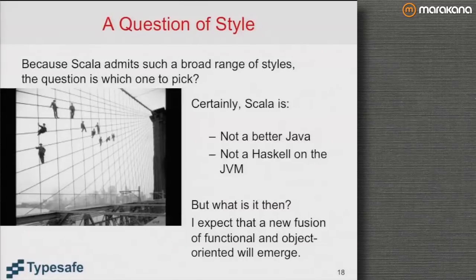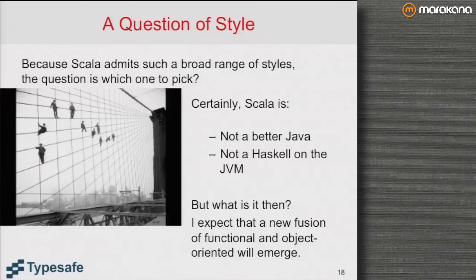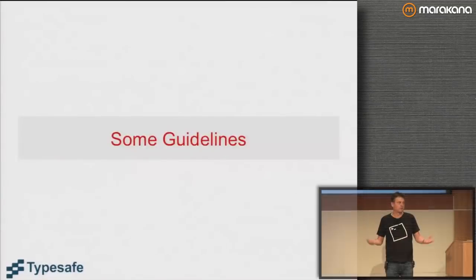Scala is certainly not a better Java, and neither is it Haskell on the JVM — I want to rule out those two extremes. What we will see emerge — but we have to work to get there — is a new fusion of functional and object-oriented programming. In the rest of this talk I want to make some tentative steps towards this fusion, answering some very concrete questions, because sometimes one can very well disagree on them.